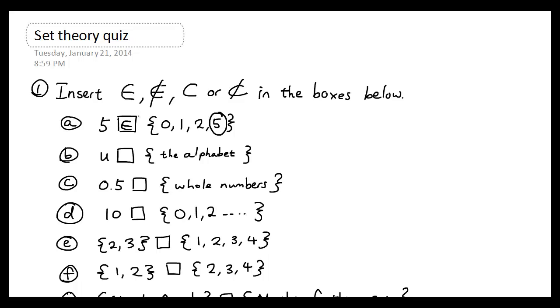So 5 is an element of this set. Question B: u is part of the alphabet, so again I can use the symbol 'is an element of.' Question C: 0.5 is not an element of the set whole numbers, because remember what we mean by whole numbers—we have 0, 1, 2, 3, 4, and so on. So this set does not include 0.5.